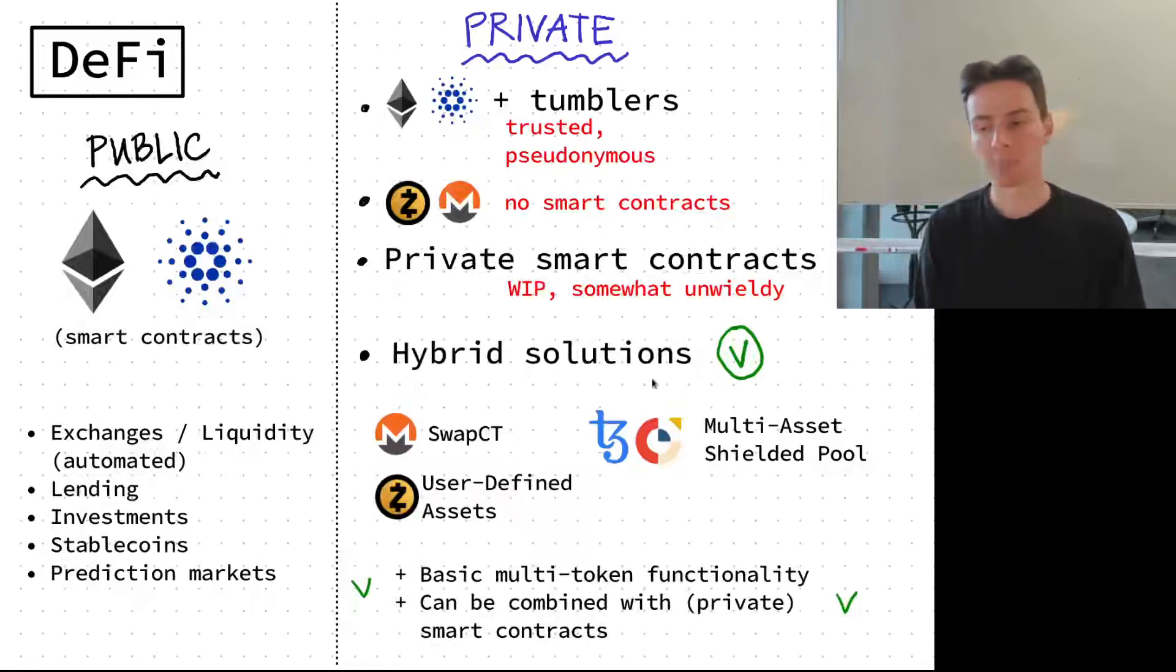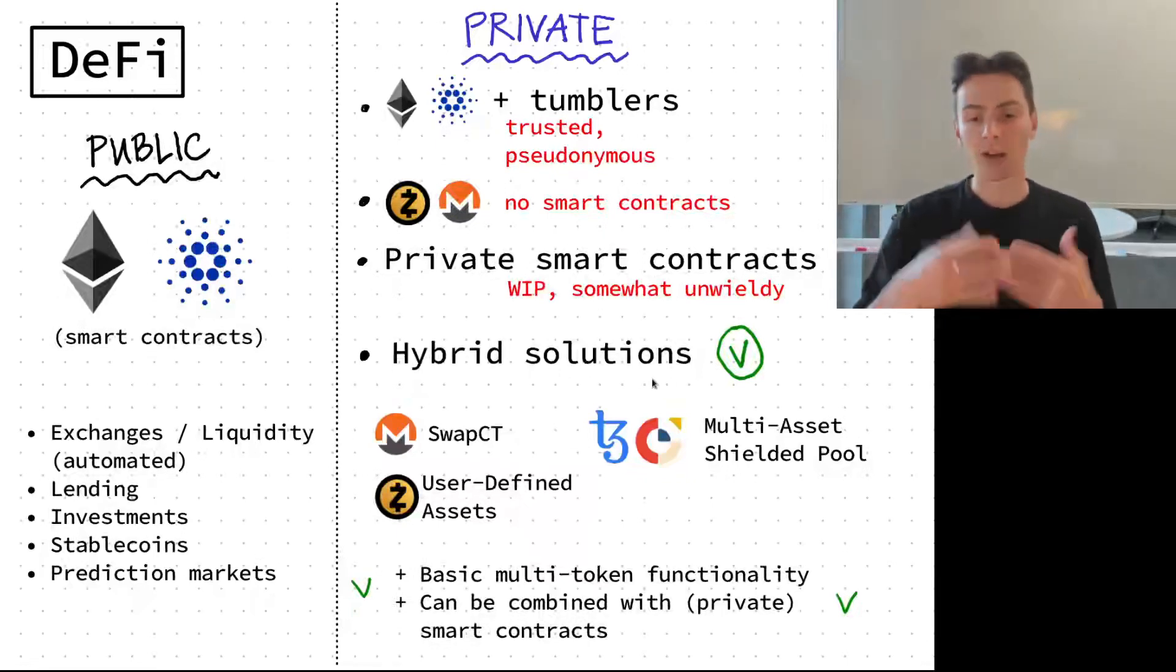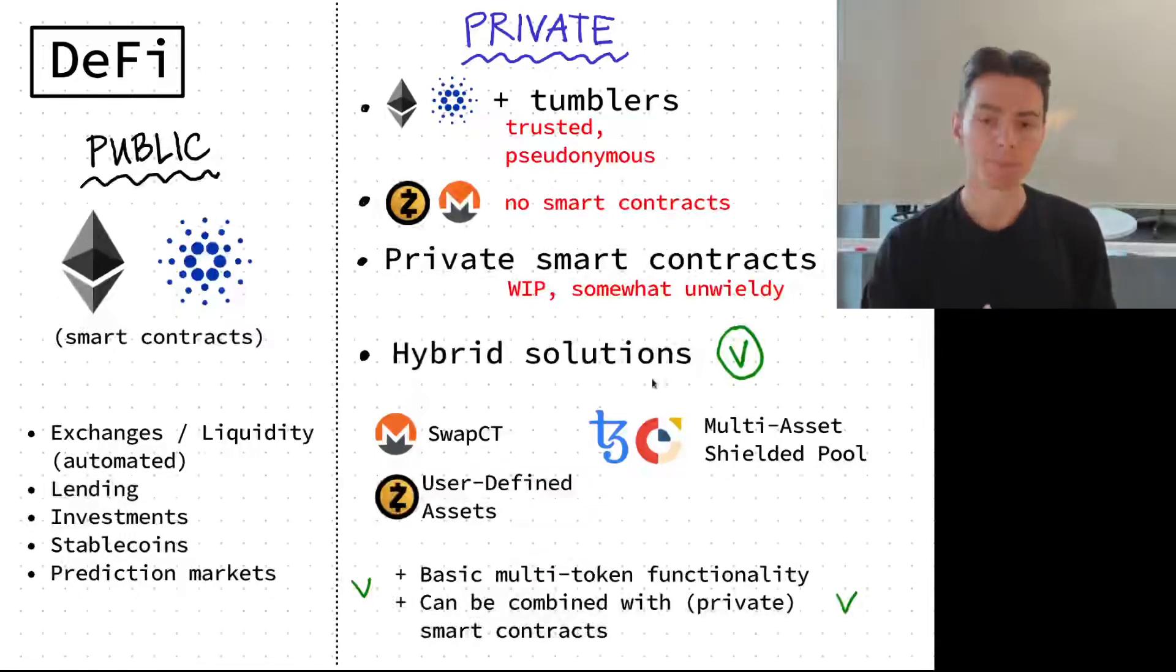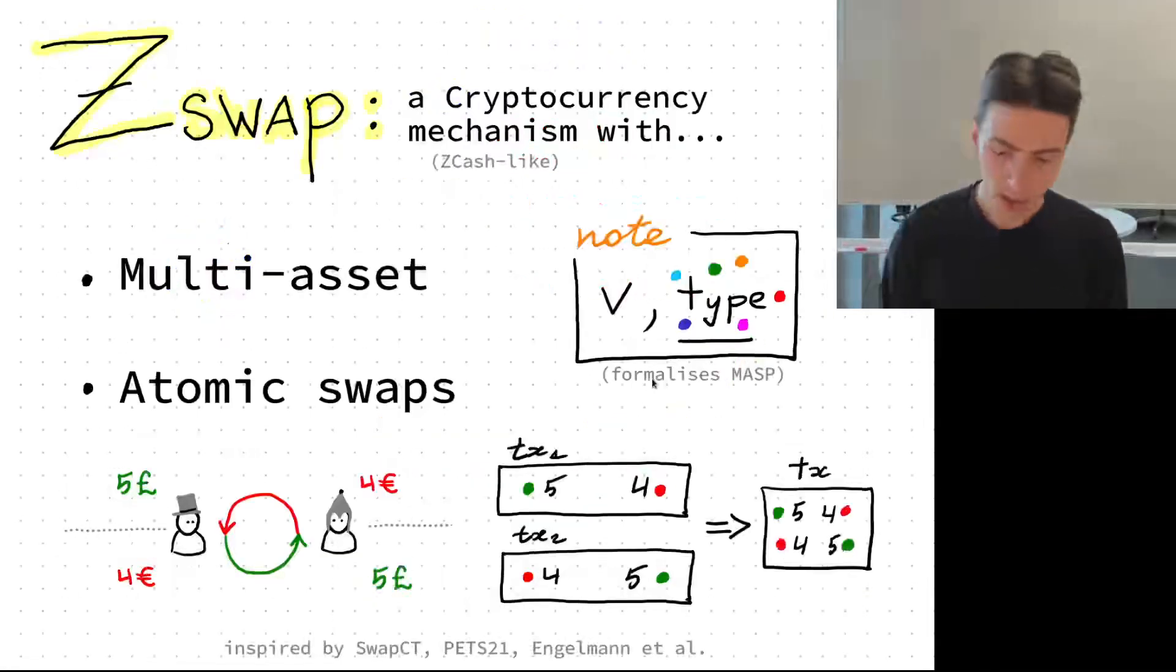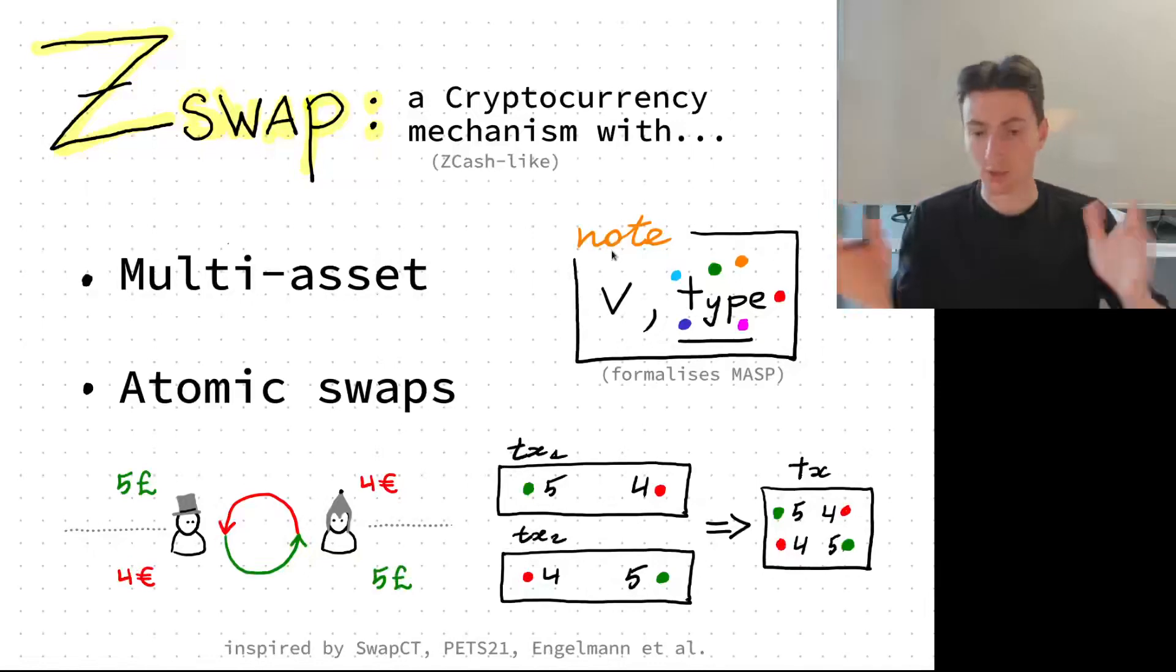We believe that these solutions can be a very solid basis for later interacting with private smart contracts, so they're very necessary to get right. In this area we present our work called Zswap, a cryptocurrency mechanism very much Zcash-like, an extension of Zcash which presents multi-asset atomic swaps. Multi-asset means that we add types into the nodes, so we have a node like a banknote that holds the value and also the type.